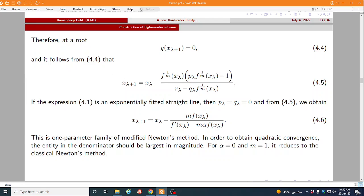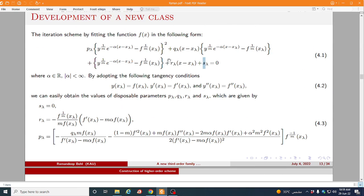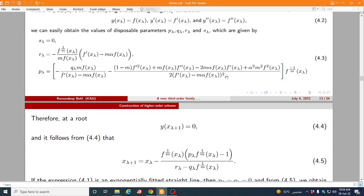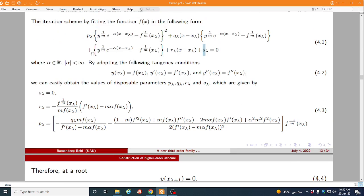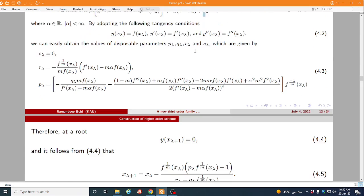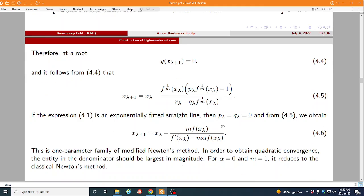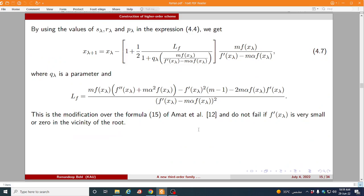So now let us assume y(xλ) is equal to 0. So it follows from 4.4 we will get a scheme like 4.5. So if in the expression 4.1 if we choose p(λ), q(λ) is equal to 0 then this curve is simply a straight line. So in that case our scheme will be this one, so this is one parameter family of modified newton method.